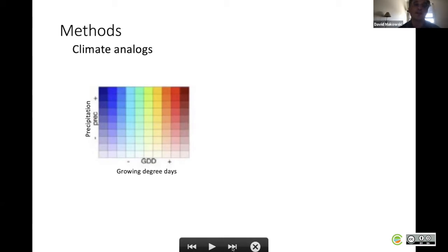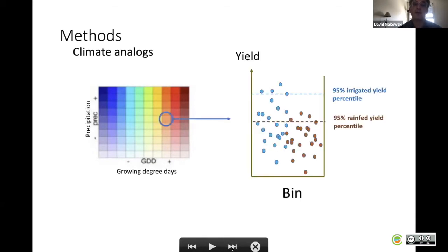Here we have 10 levels of growing degree days and 10 levels of precipitation. When we combine these 10 by 10 levels, we obtain 100 bins. Each bin includes a number of yield data collected from a global survey derived from the Monfreda et al paper.